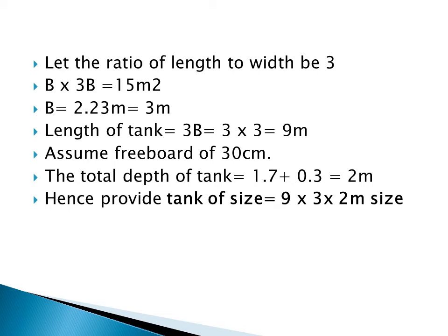The next step is to find the total depth of the tank. You must add the bottom depth plus the freeboard. For a septic tank, a freeboard of 30 centimeters, which equals 0.3 meters, is normally provided. So the total depth equals 1.7 plus 0.3, giving 2 meters. Hence the size of the tank is 9 meters by 3 meters by 2 meters — length, width, and total depth respectively.